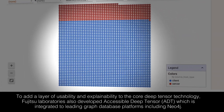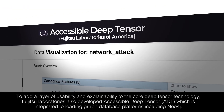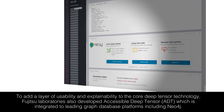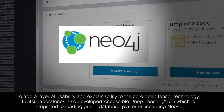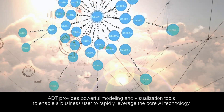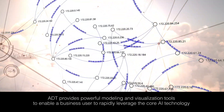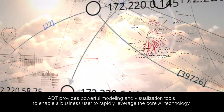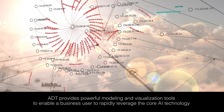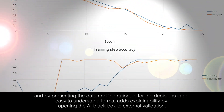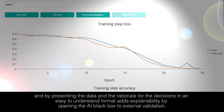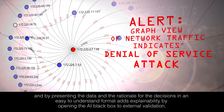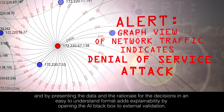Fujitsu Laboratories also developed Accessible Deep Tensor, ADT, which is integrated to leading graph database platforms, including Neo4j. ADT provides powerful modeling and visualization tools to enable a business user to rapidly leverage the core AI technology. And by presenting the data and the rationale for the decisions in an easy-to-understand format, it adds explainability and opens the AI black box to external validation.